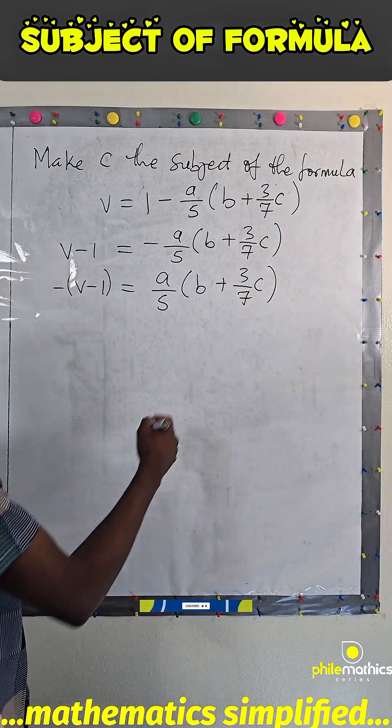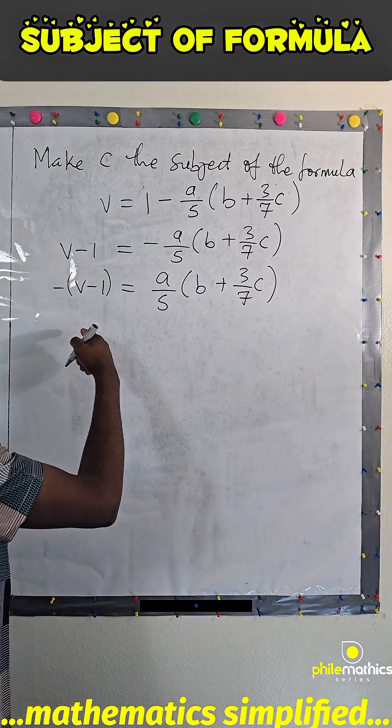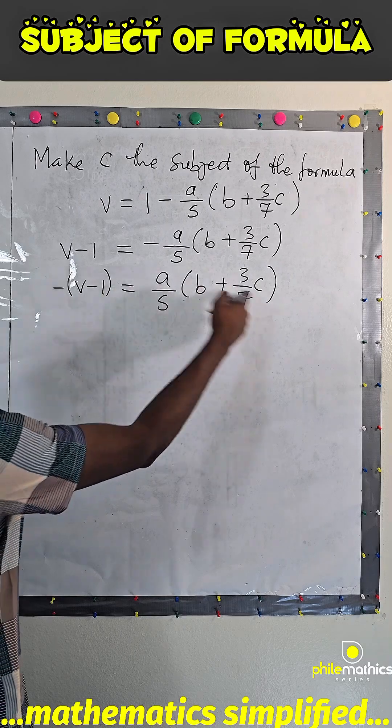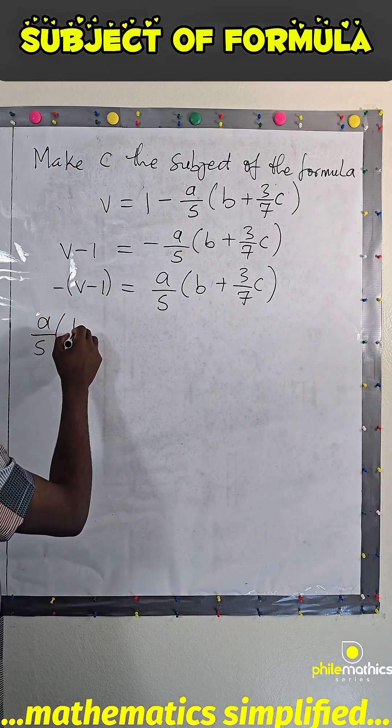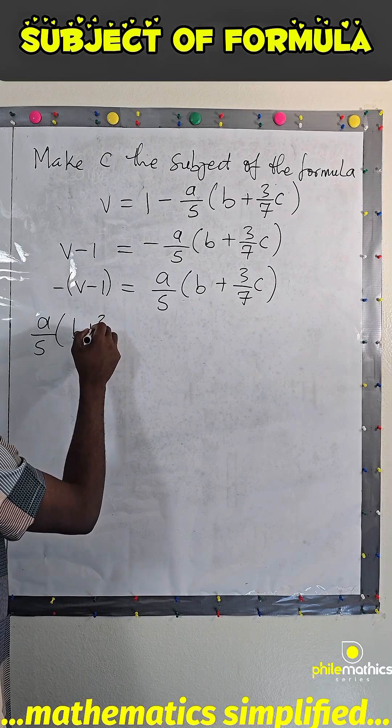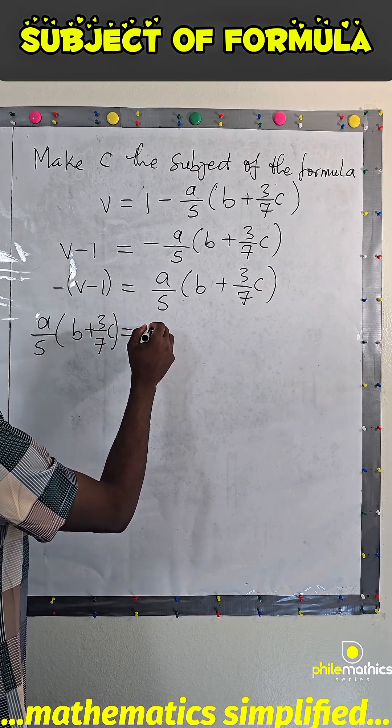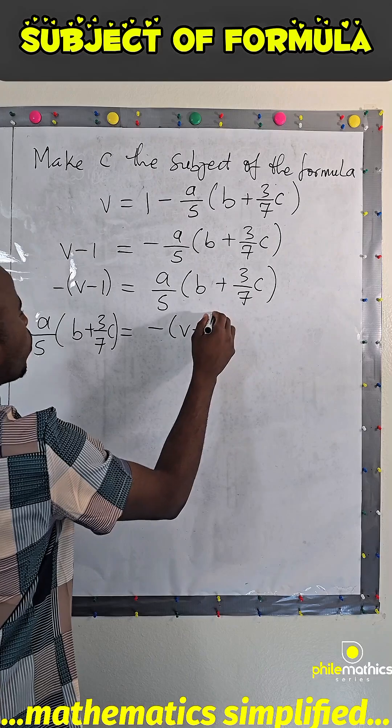Okay, permit me to rearrange this. So, if I take this to this side, I will have A over 5, B plus 3 over 7, C equals minus V minus 1.